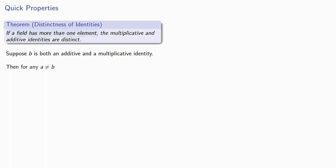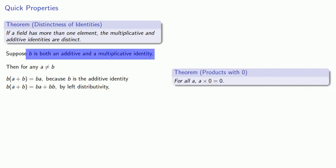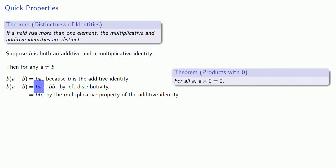So for any A not equal to B, B times the sum A plus B must be B times A because B is the additive identity and A plus B has to just be A. On the other hand, we can apply the distributive property: B times A plus B is BA plus BB. And since our assumption is that B is the additive identity, we know that B times A is going to be 0.